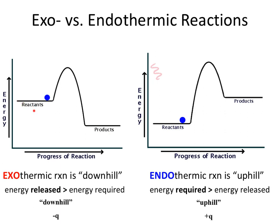When this reaction goes from reactants to products, energy is being lost — in the form of heat. When we go from higher energy reactants to lower energy products, energy is lost in the system as heat. This is an exothermic reaction — the reaction is downhill — and the energy released is represented by a negative Q value.